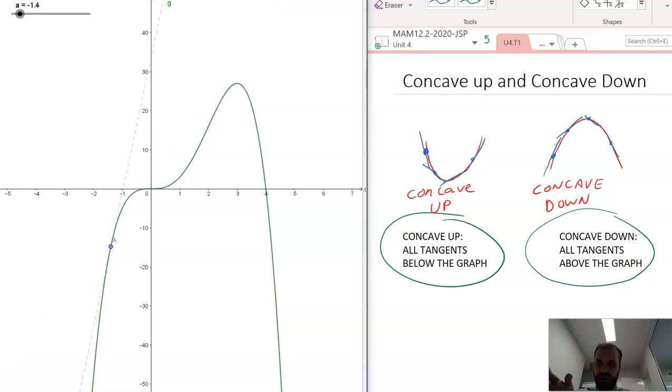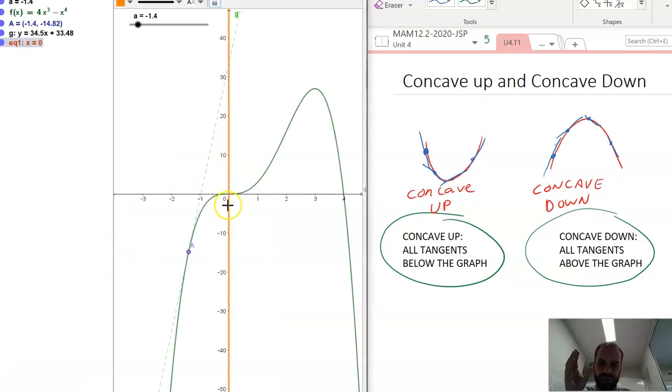Okay, so from everything less than this orange line, this x equals 0 line, is concave up. All of that stuff is concave up from 0 to negative infinity for this thing.